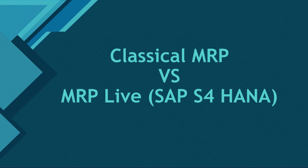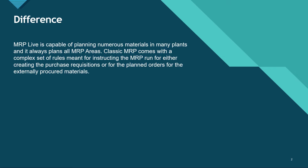We are doing a comparison between classical MRP versus MRP Live which is in S4 HANA. MRP Live is capable of planning numerous materials for many plants and normally plans for all MRP areas, whereas classical MRP comes with a complex set of rules meant for instructing the MRP run for either creating purchase requisitions or planned orders for externally procured materials.